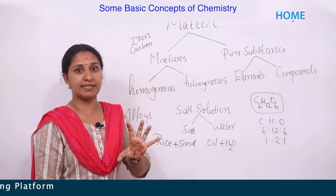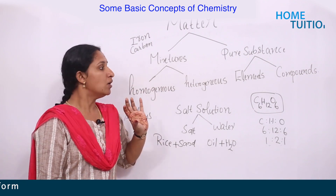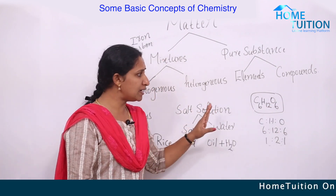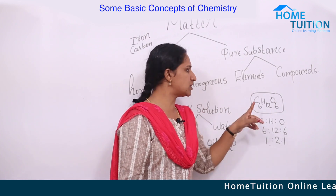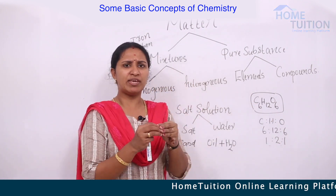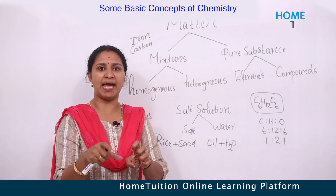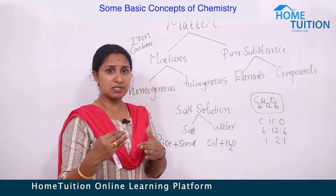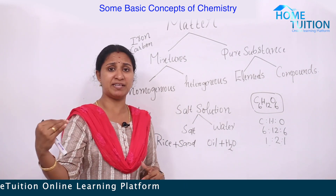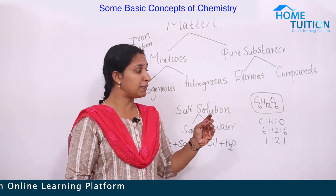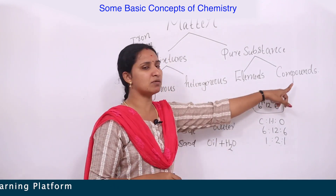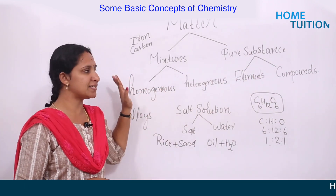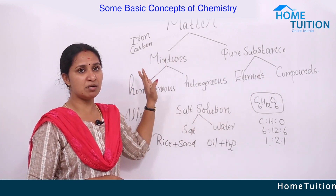Pure substances contain a definite proportion of components and we cannot separate the components using simple physical methods. For example, in glucose we cannot separate carbon, hydrogen, and oxygen by hand-picking or filtration — we can only separate them chemically, not physically.